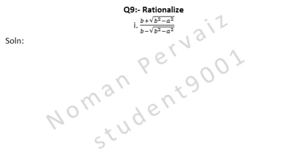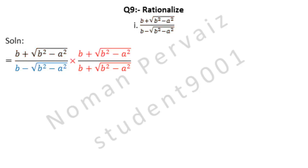Let's see its solution. Is equal to — we are taking the question as it is. The denominator is indicated in blue color, which is B minus under root B squared minus A squared. Its conjugate will be B plus under root B squared minus A squared.